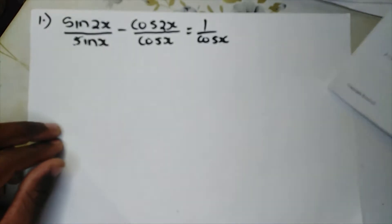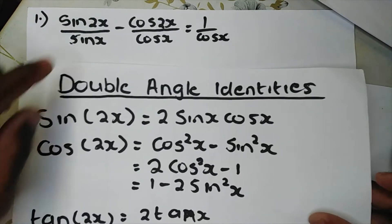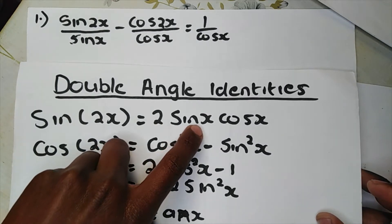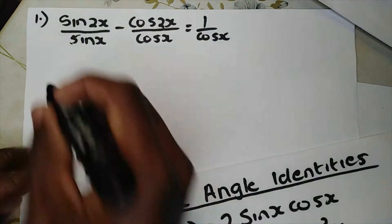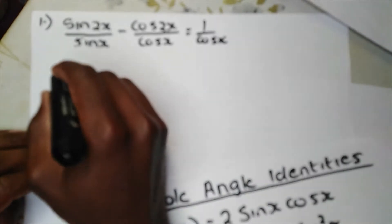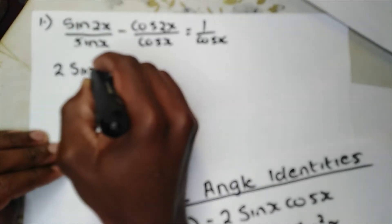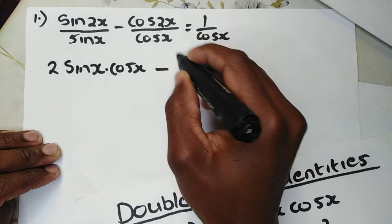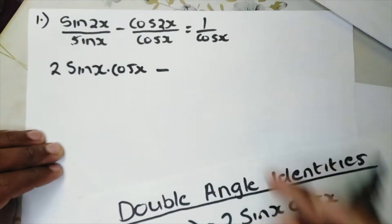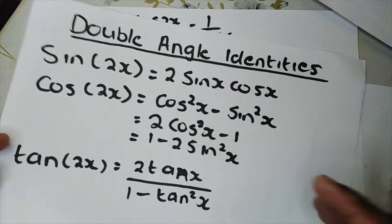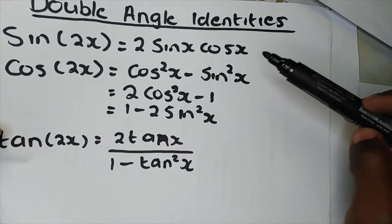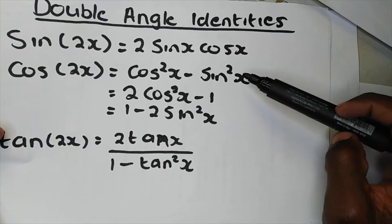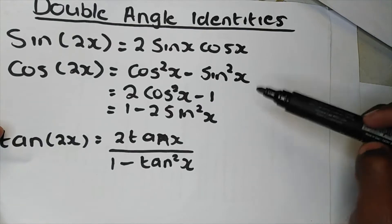So you can change sin 2x to be 2 sin x times cos x. Then here: 2 sin x times cos x minus — you can change cos 2x. On a double angle there are options, but what I want is the right side.